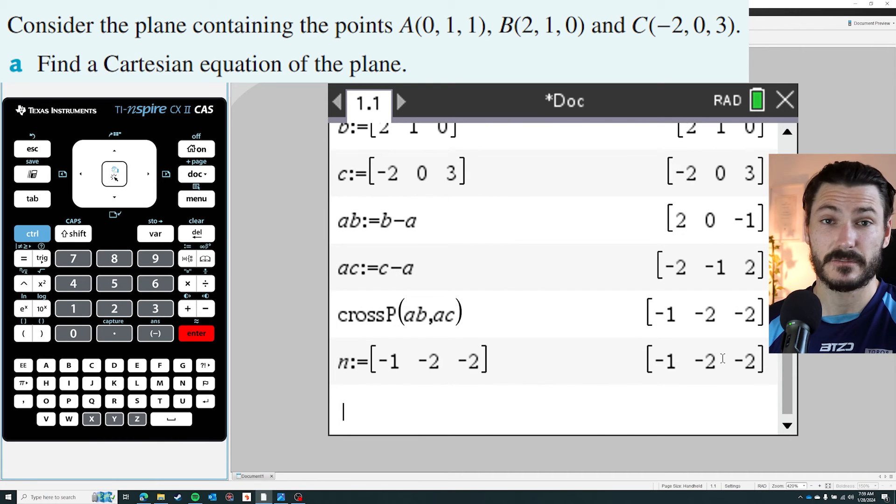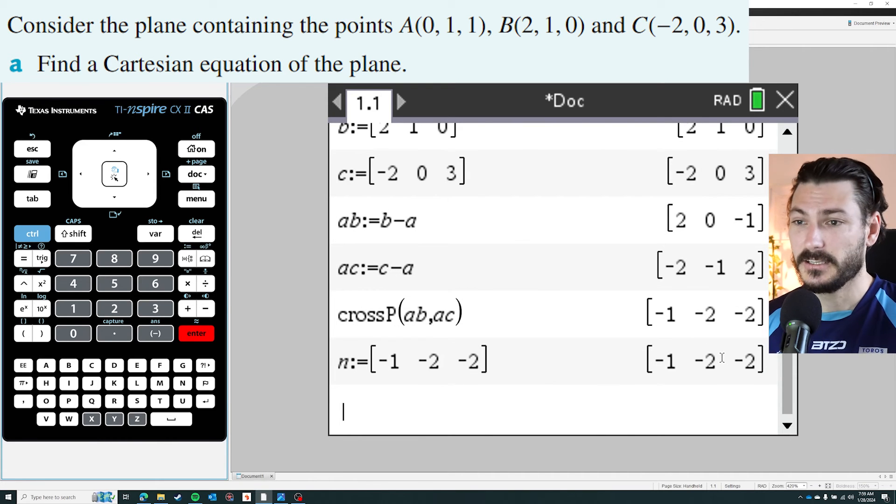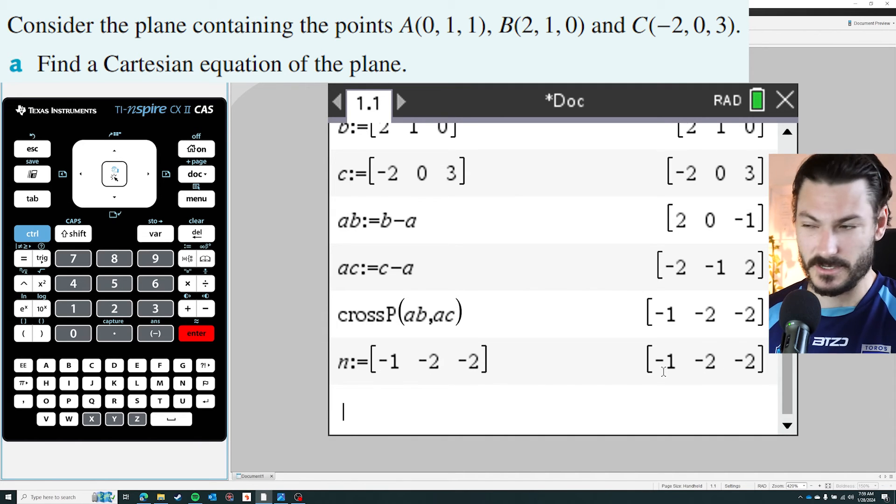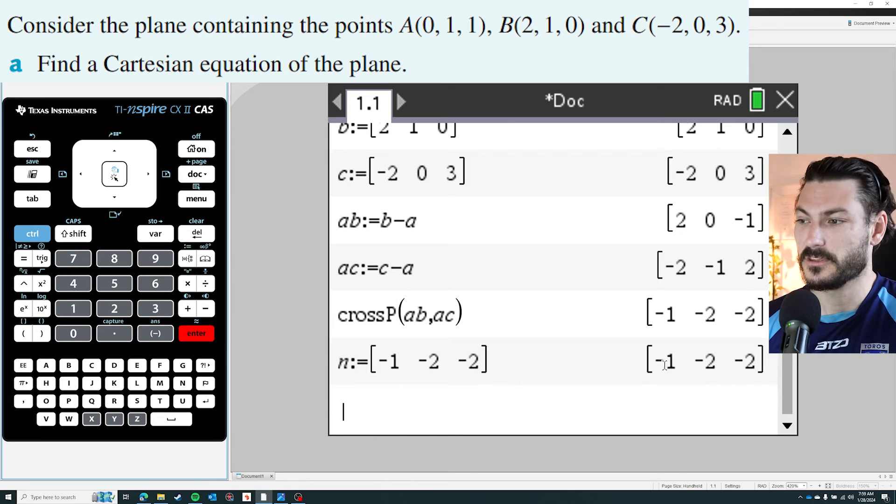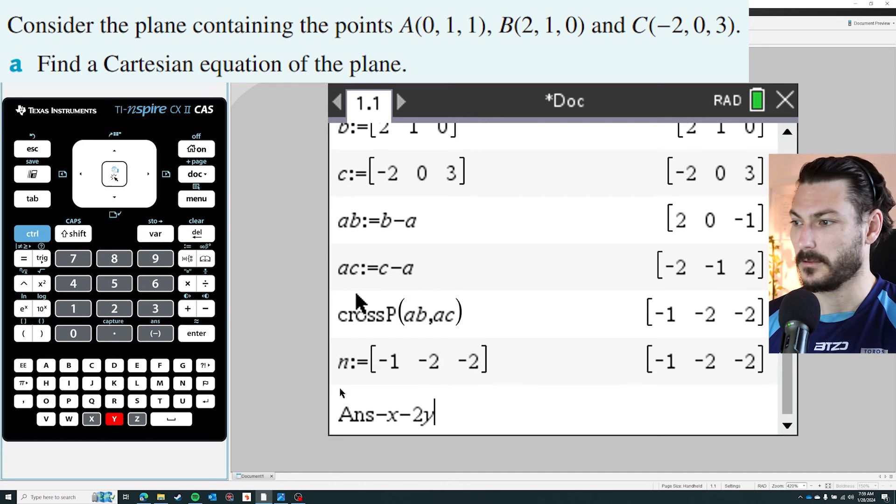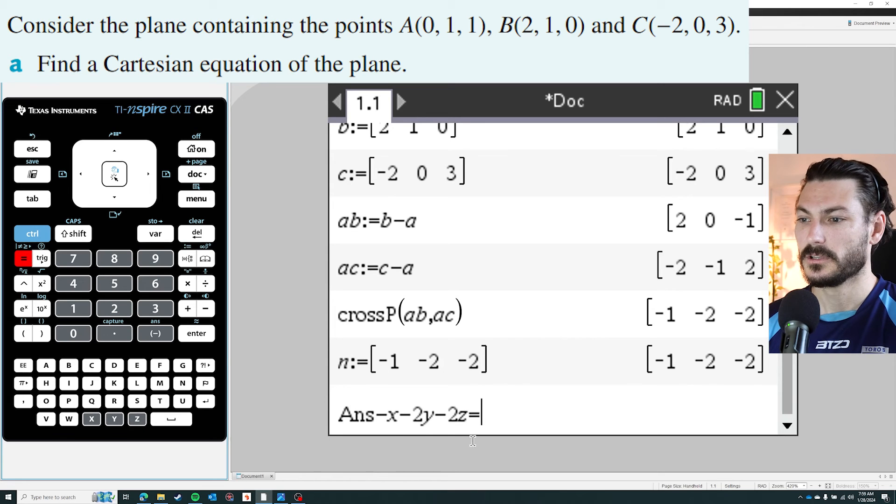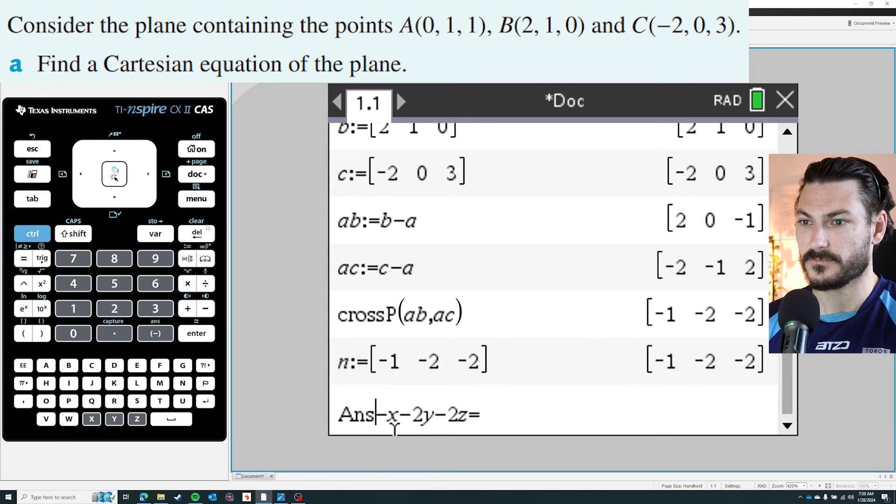So nearly there. To define the Cartesian equation of a plane, I know that it's just going to be the normal vector dot-producted with some vector r, which is xyz. That's going to give me negative x minus 2y minus 2z, and that's going to equal some point on the plane dot-producted with the normal.